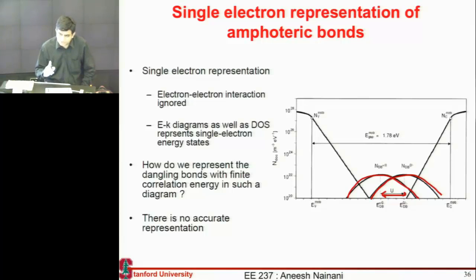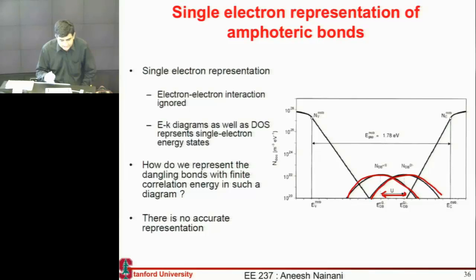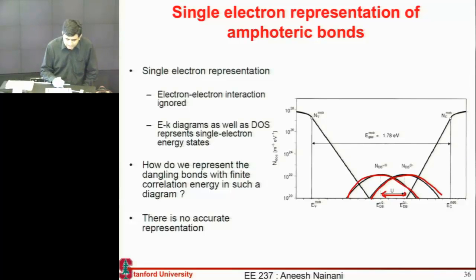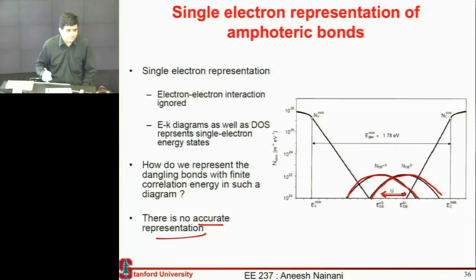They all belong to one state, but I separate them out because of the insufficiency of band diagrams to represent these kind of states. Due to the limited physics I can represent in this band diagram, I represent that one state — which can hold multiple carriers — as these two distributions. Keep in mind there's no accurate way to represent them; I'm essentially inventing physics as I go along to satisfy my device modeling and to understand these cells better.